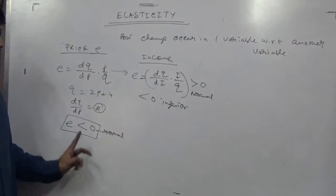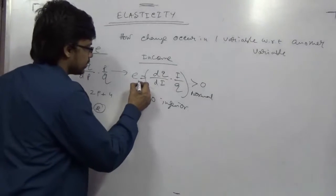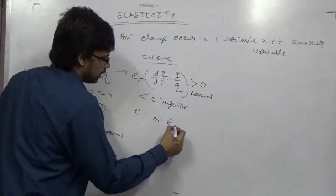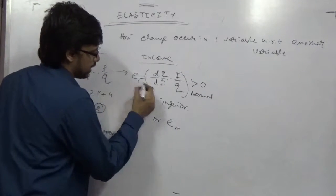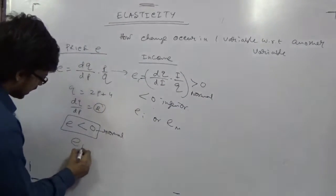Now income elasticity is expressed by sometimes ei, ai or e. If you write it i you write i, if you write m. This is as eb.